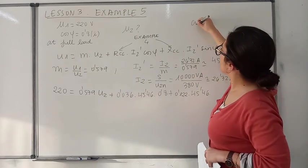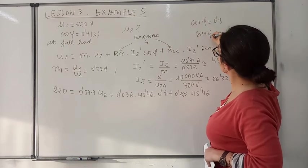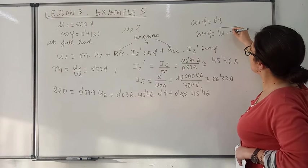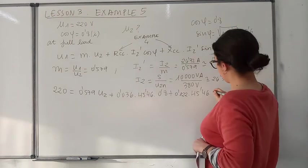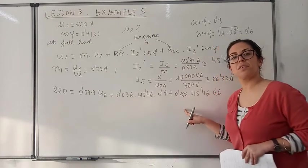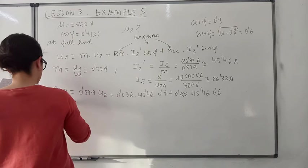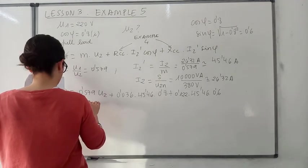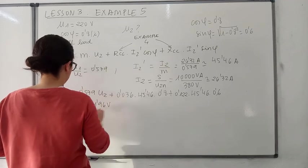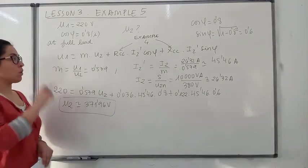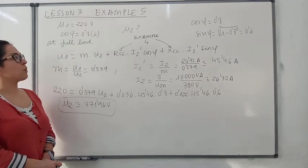If the cosine of the angle is 0.8, then the sine of the angle would be 0.6. So with sine equal to 0.6, solving the equation for U2, you will get that U2 is approximately 371.96 V. This is the effective voltage that you will have in the secondary winding under these load conditions.